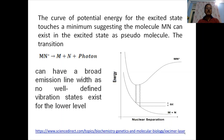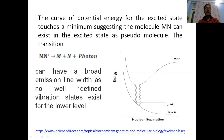The potential energy curve for the excited state has a minimum suggesting the molecule MN can exist in the excited state as a pseudo-molecule. The transition can have a broad emission line with no well-defined vibrational state levels. The minimum is not sharp, so a sharp single wavelength is not obtained — instead it has a broad emission line width.